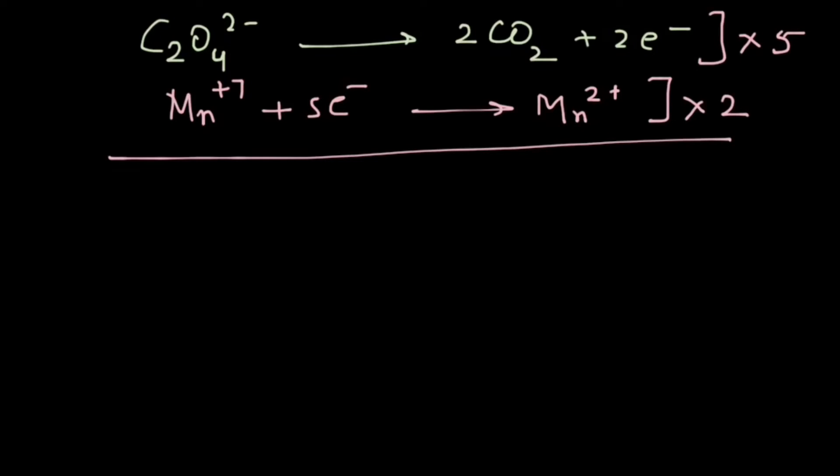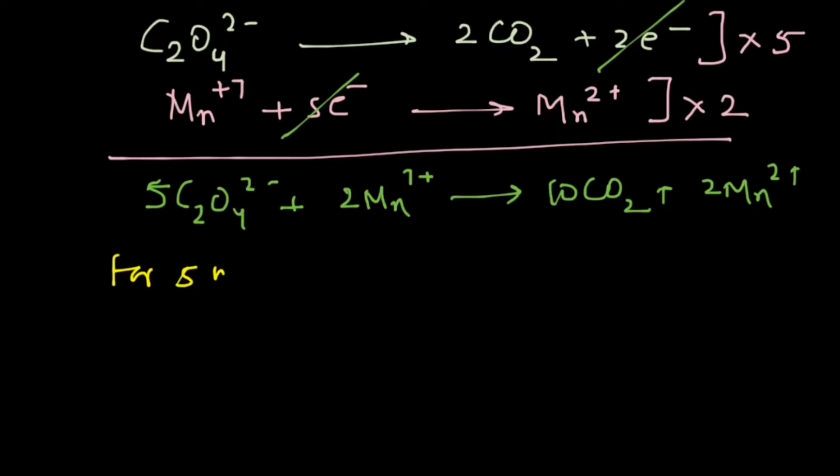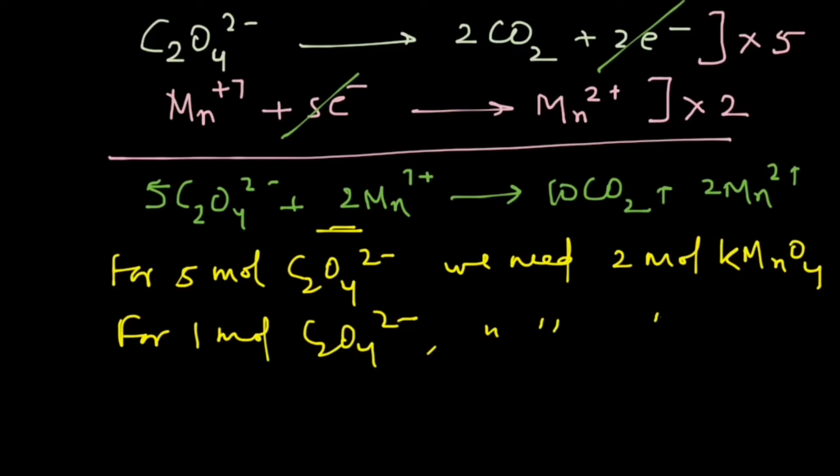So there are 10 and 10 electrons that get cancelled out, and we can get 5 C2O4 2- plus 2 Mn7+ will give 10 CO2 plus 2 Mn2+. So from the reaction once again we can write that for 5 moles C2O4 2- we need 2 mole KMnO4, and so for 1 mole C2O4 2- we will need 2 upon 5 mole KMnO4.